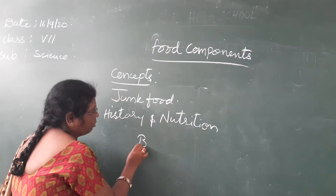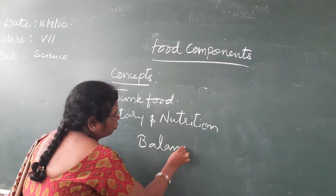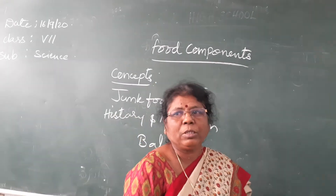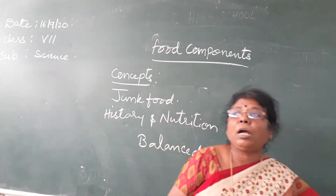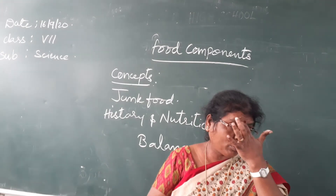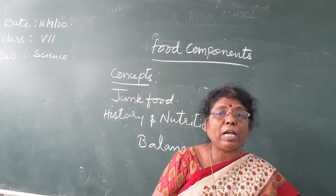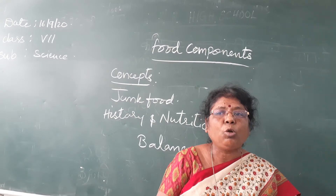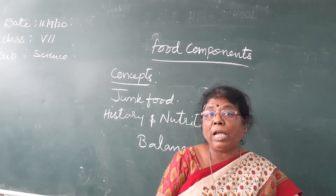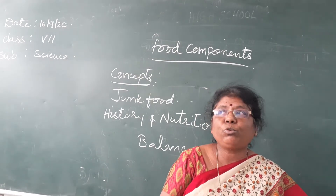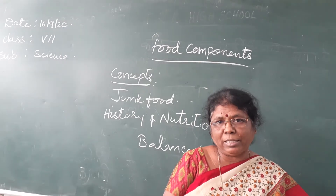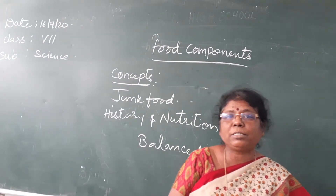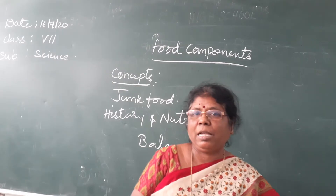Already we have discussed about the balanced diet also. So here, now what you have to take adequately, what you have to take sufficiently — in plenty or moderately. We have to take fruits and vegetables in plenty. We have to take cereals and pulses adequately.